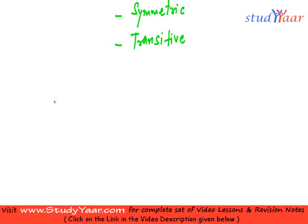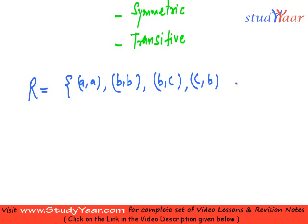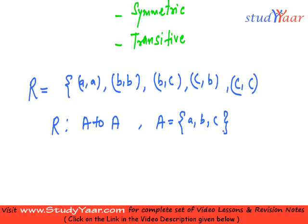Let us suppose my R is equal to (a,a), (b,b), (b,c), (c,b), (c,c). I am saying that R is a relation from A to A where A is equal to {a, b, c}. Now let us check out if my R is equivalent.